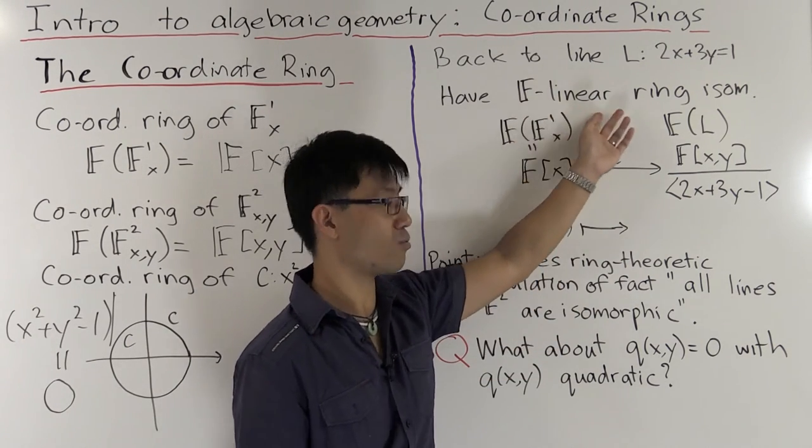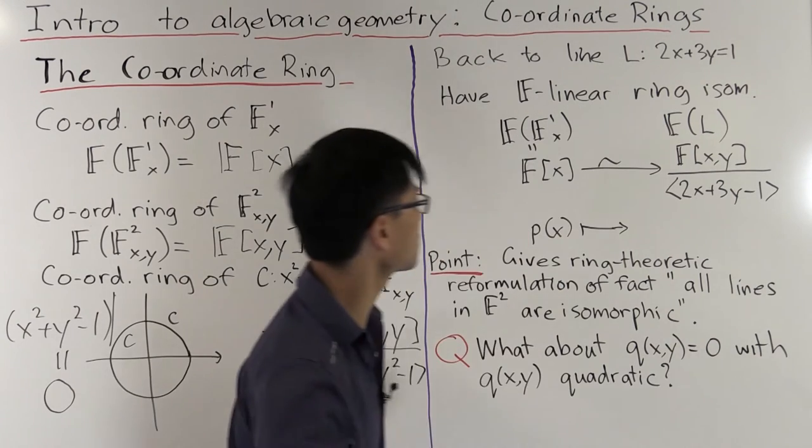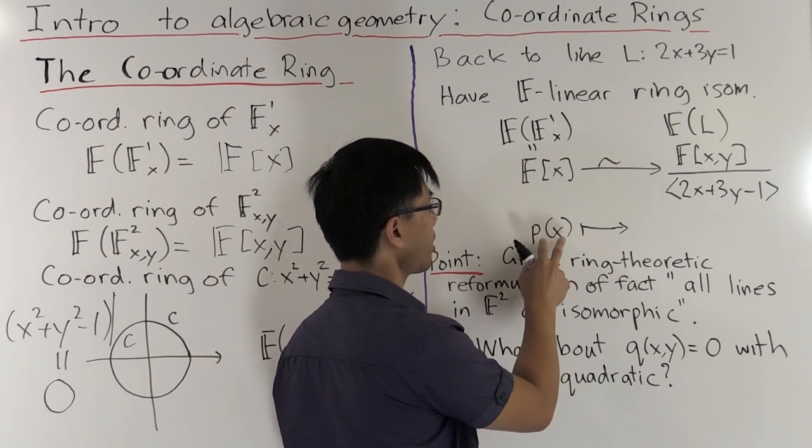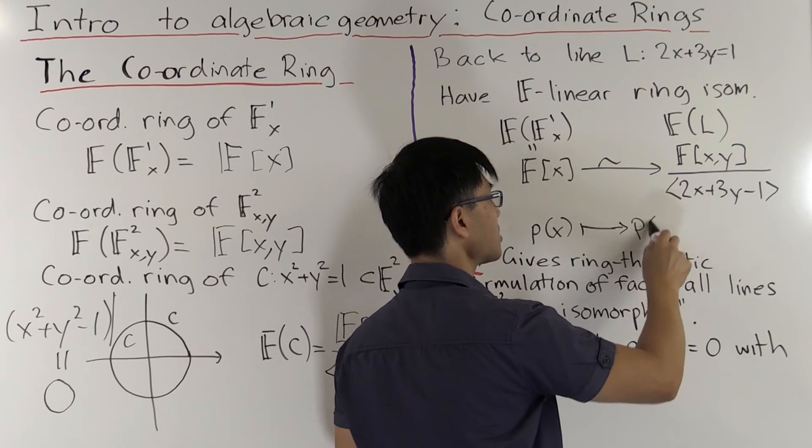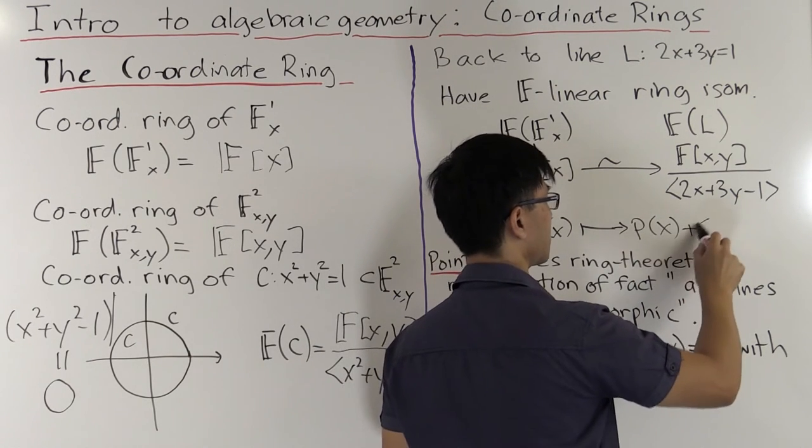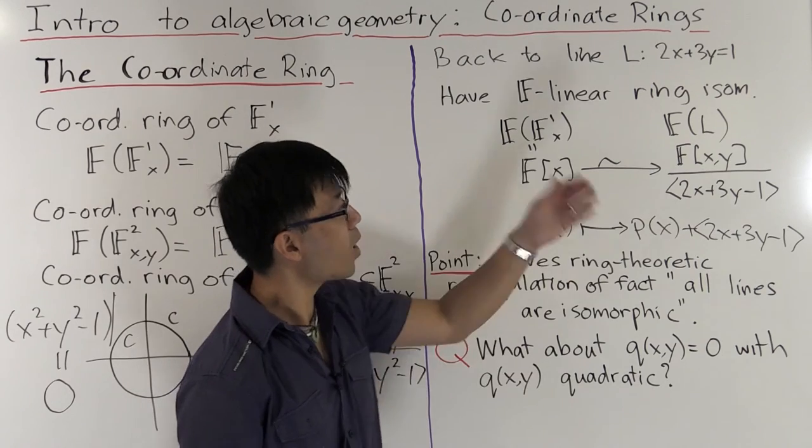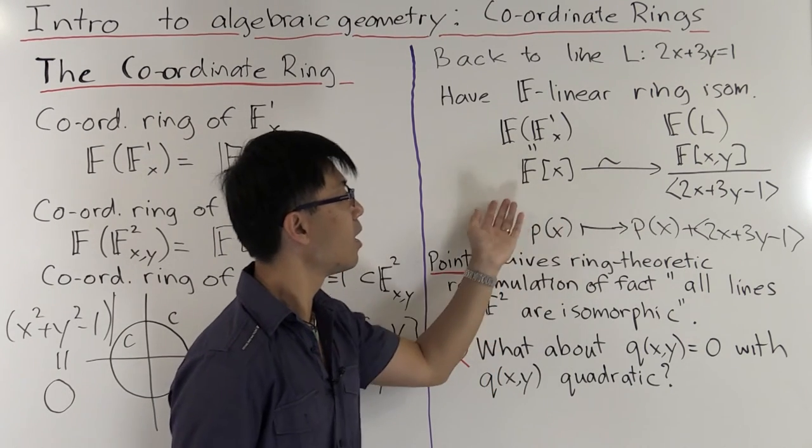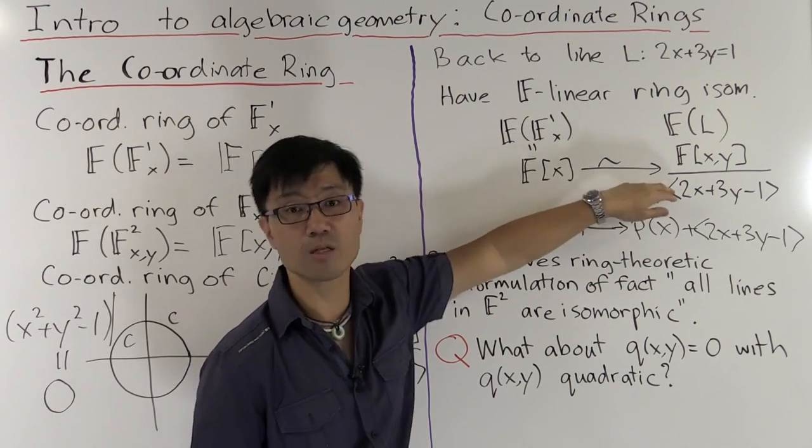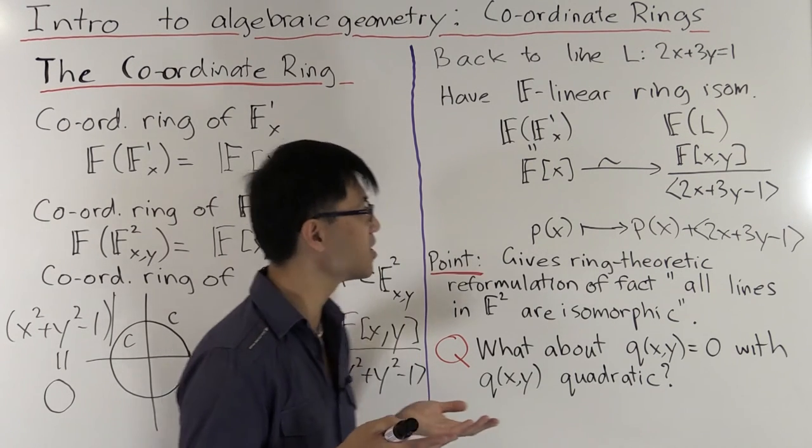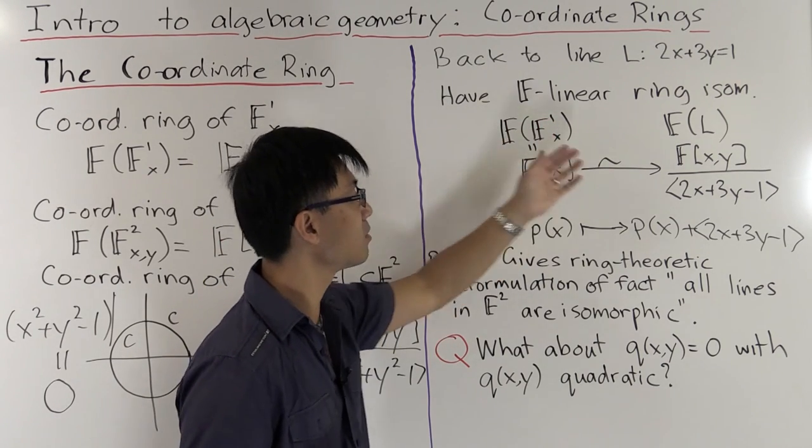So in this case, there is, in fact, a ring isomorphism. And in fact, it's an F-linear ring isomorphism. And it's quite easy to see what it is. Here, we need to send a polynomial in x to a coset of a polynomial in x and y. And in fact, it's just the same polynomial, p of x. And remember to take the coset of that. It's quite easy to check that this is a ring isomorphism. And we see, almost immediately, that it's linear over F.